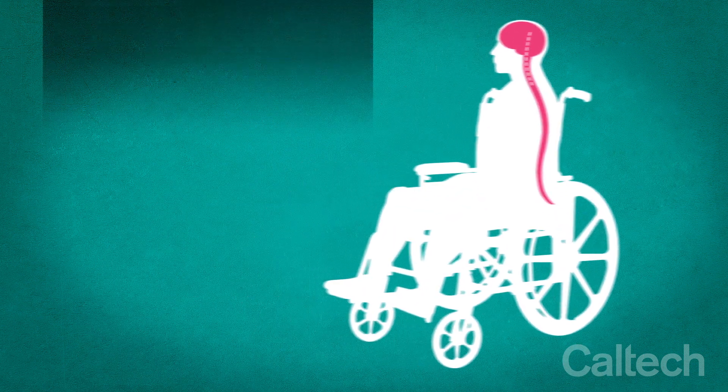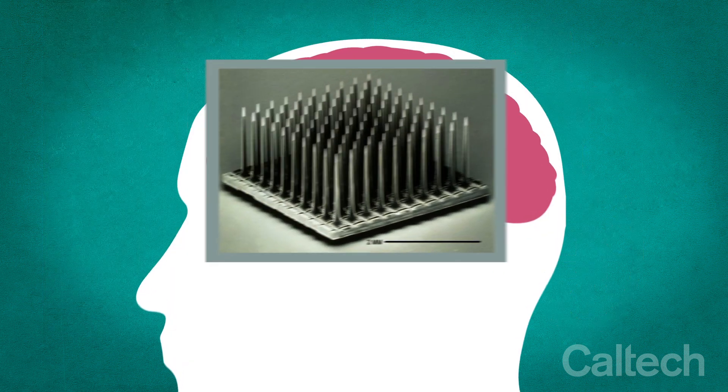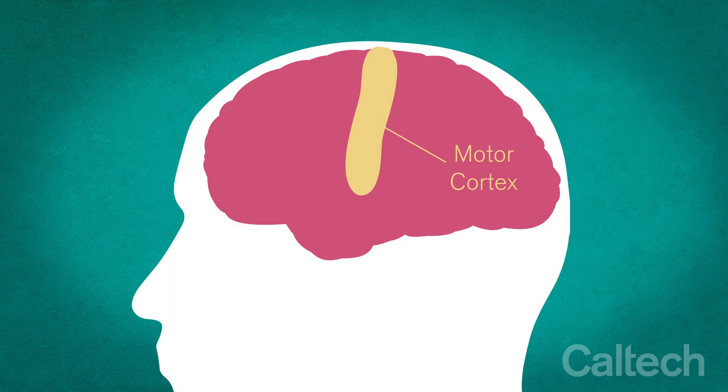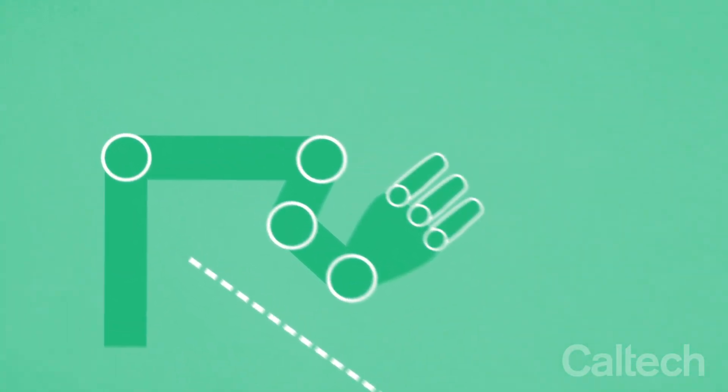Neural prosthetics facilitate movement via artificial limbs. Tiny electrodes implanted in the motor cortex transmit signals to a computer, where they are translated as instructions for a robotic arm.